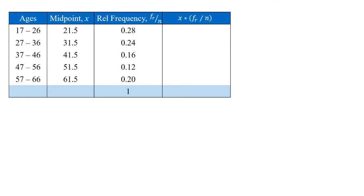The next step in the process of calculating the weighted mean is to take the midpoint values previously calculated and multiply them times the relative frequency.